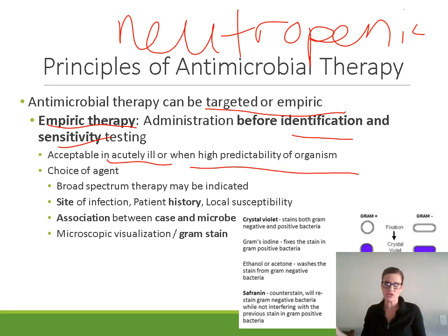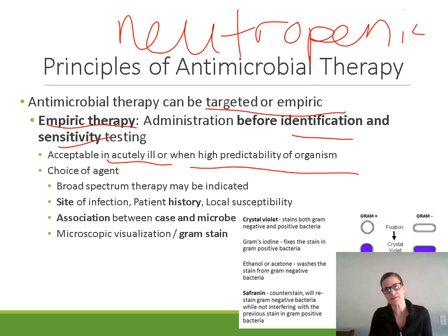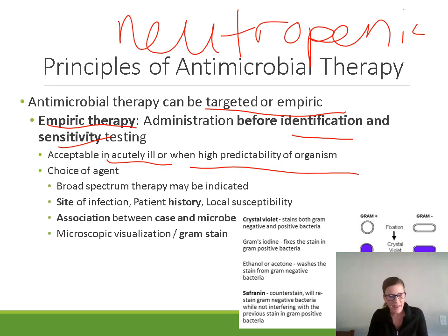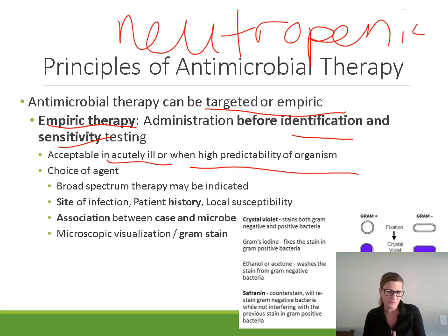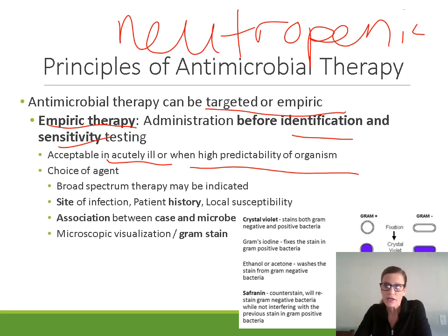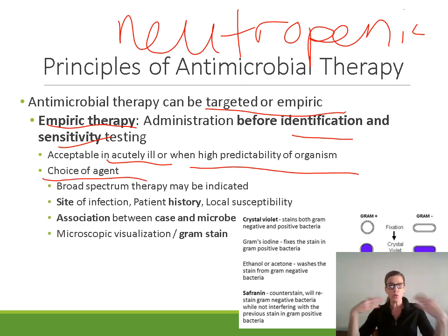If the patient isn't feeling better in 72 hours, then you can think, 'maybe this is a resistant bacteria, or maybe something else is causing the infection.' So if you decide to give empiric therapy, you have to decide what drug to use. There are multiple things that guide your choice of therapy.